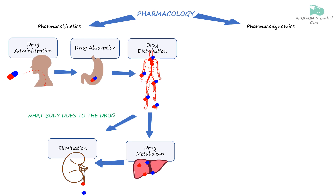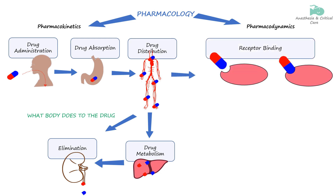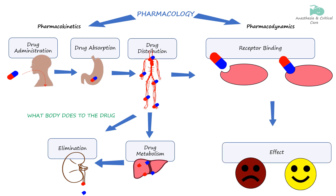As the drug moves through the body, it interacts with specific receptors located in various tissues and organs. When the drug binds to these receptors, it triggers its intended effects such as causing pain relief or sedation. This process is referred to as pharmacodynamics, which describes what the drug does to our body.